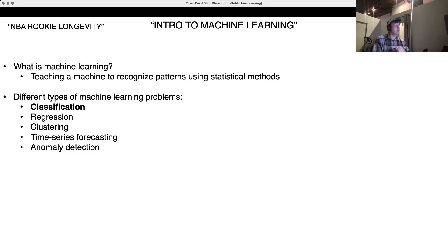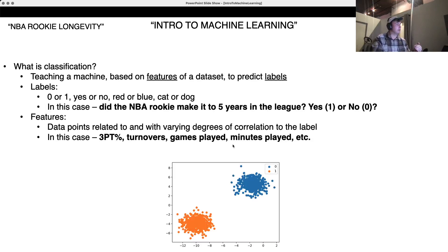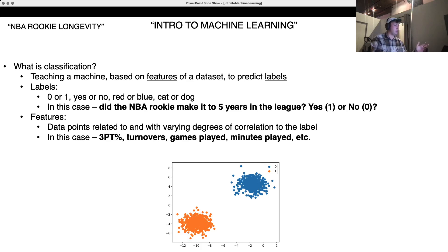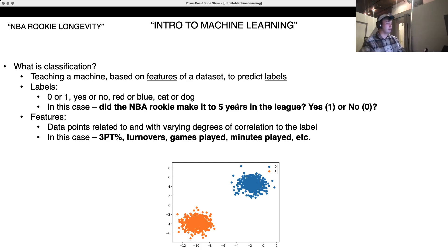There are different kinds of machine learning problems: classification, regression, clustering, time series — that's just a handful of them. I've bolded classification because that's what we're doing here. This data set is meant for classification. So what is classification? It's teaching a machine, based on the features of a data set, to predict the label. In our case, the label is yes or no — did the rookie make it to five years in the league? The label could be a zero or a one, a yes or no, a red or blue, cat or dog. I've only listed binary classification issues here because that's what we're doing today.